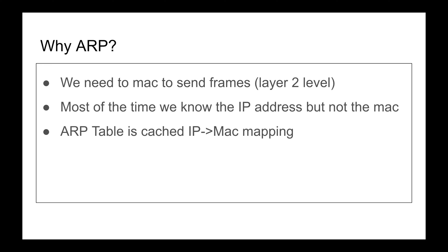When I make a request to a web server, say to IP 10.0.0.3 on port 8080, that request translates into a frame. That frame has the source and destination IP address, the source and destination port, and at a lower level we put the destination and source MAC address. So if I have an IP address I know my IP, but I don't know the MAC — we need a method to convert IP to MAC, and that's what ARP is: Address Resolution Protocol finds the MAC address for a given IP address.